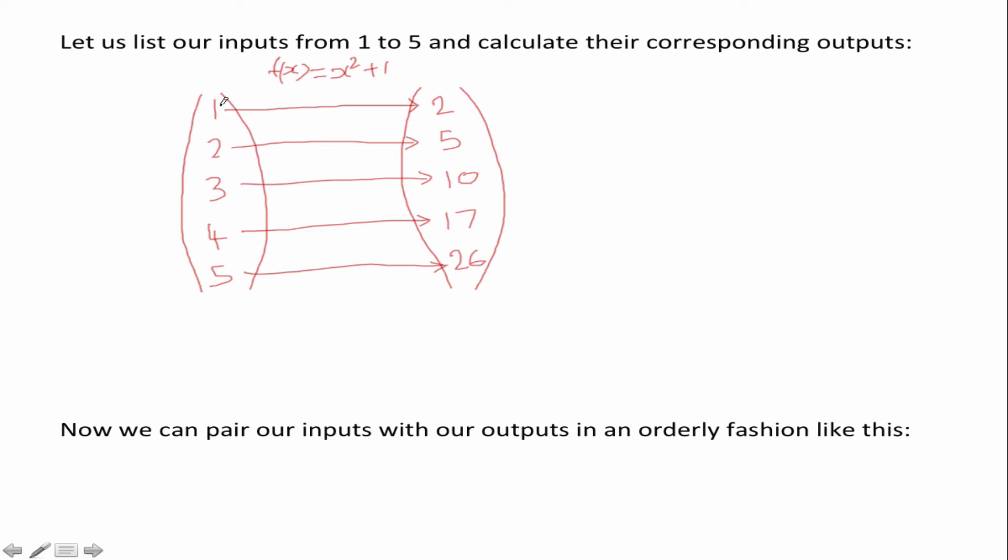And what is produced from this we call this a mapping diagram is a series of ordered pairs. We have one comma two that is our first ordered pair, two comma five, three ten, four seventeen, and five twenty six.